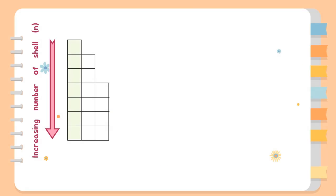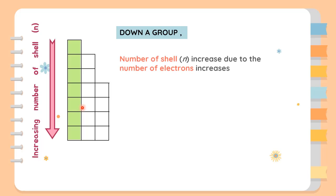Next is the trend when going down a group. Down a group, atomic radius is expected to increase due to increasing number of shells. In period 1 we have one shell, period 2 we have two shells, period 3 we have three shells, and so forth. Our explanation starts by mentioning that having more shells means the number of electrons will increase, and by having more electrons, the shielding effect will also increase.